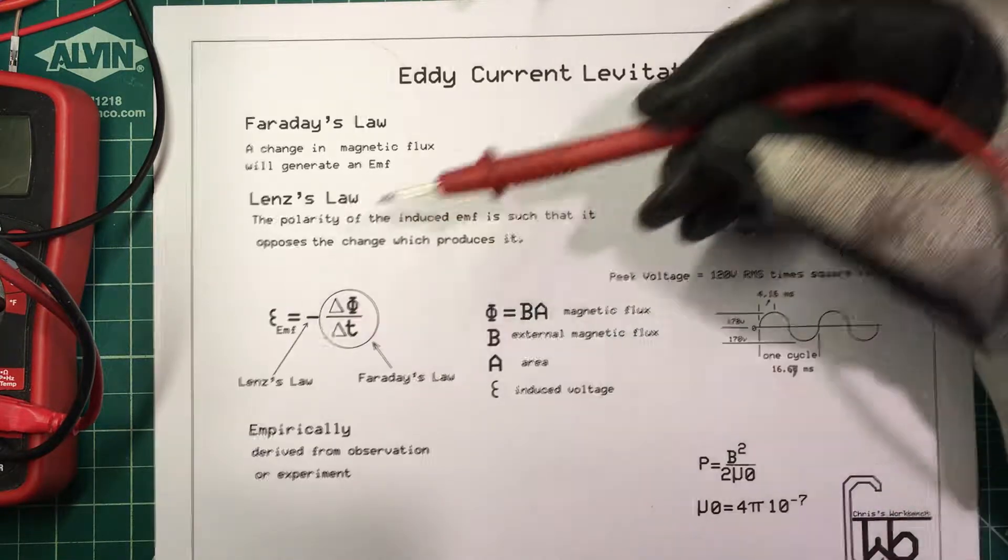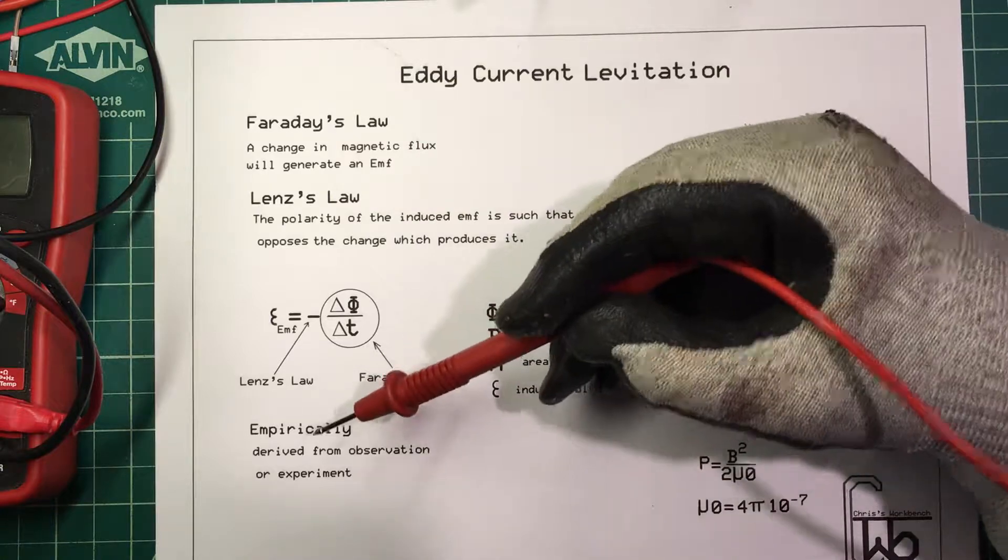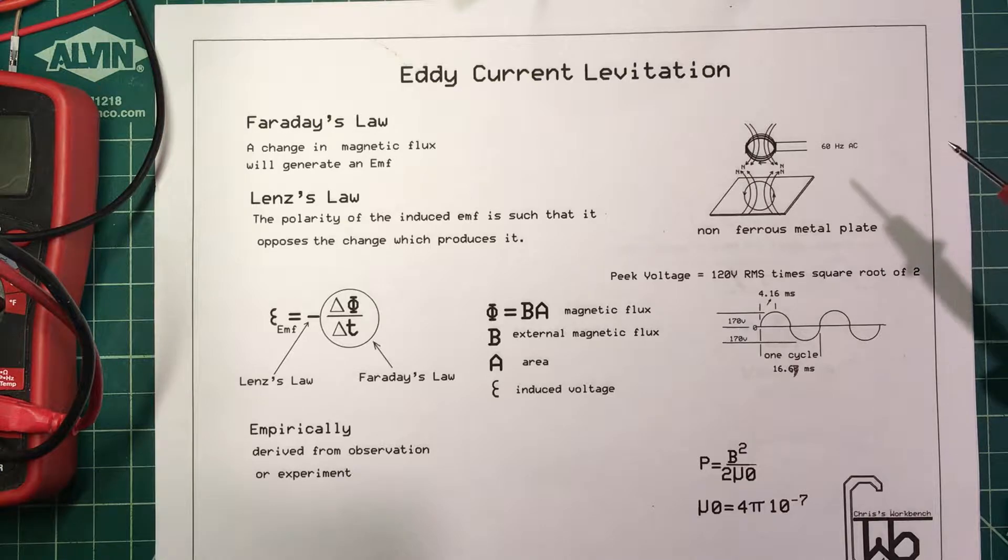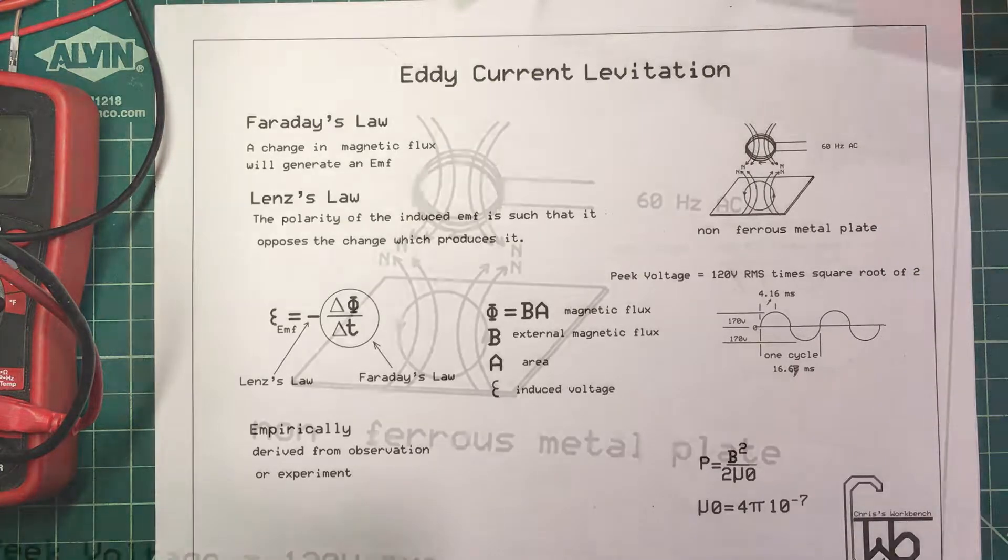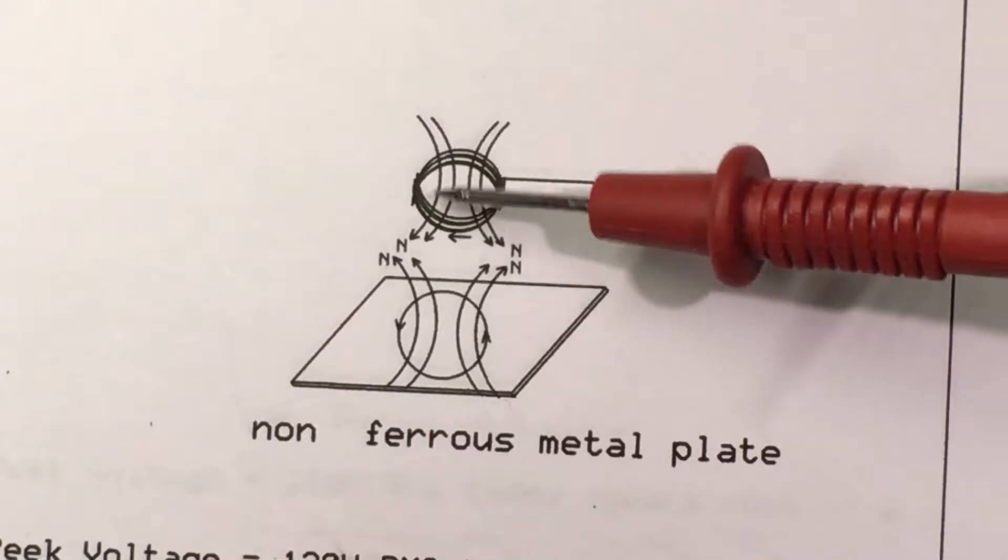This is the minus sign. Faraday came up with his law empirically—he derived it from observation or experiment. Now we're going to try an experiment ourselves. I wound up a coil of wire, and if we put a current through it in this...